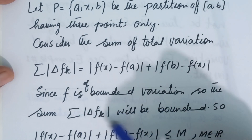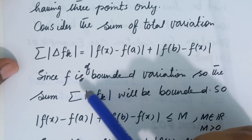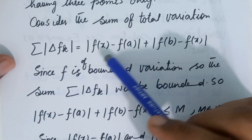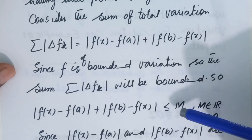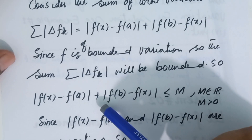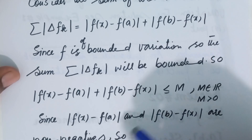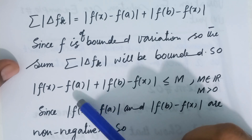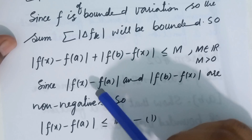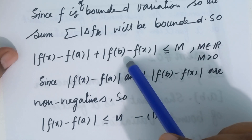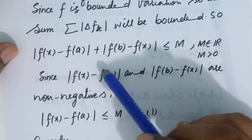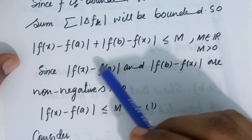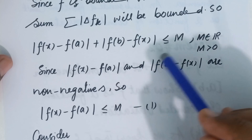Since f is of bounded variation, the sum is bounded by definition. So there exists a positive real number M for which this sum is less than or equal to M. Setting this inequality, we have |f(x) − f(a)| + |f(b) − f(x)| ≤ M. Since both quantities are absolute values and hence non-negative, and their sum is less than or equal to M, individually each quantity must be less than or equal to M. This implies |f(x) − f(a)| ≤ M.